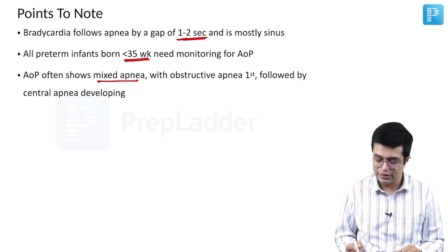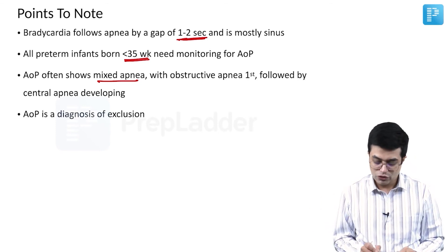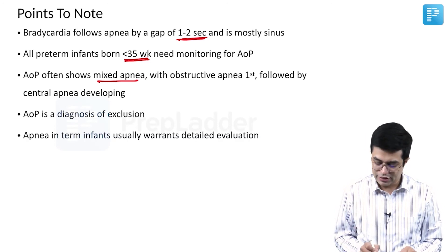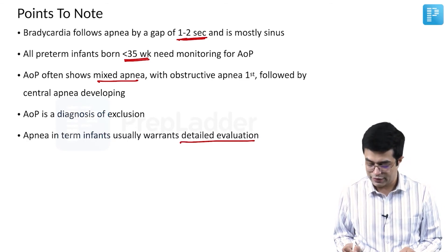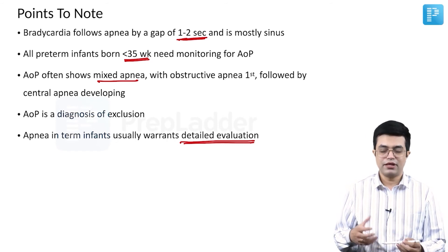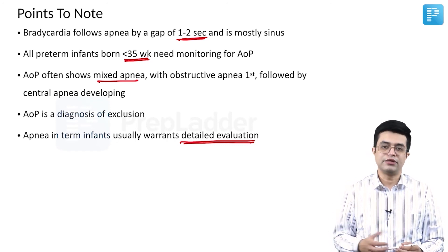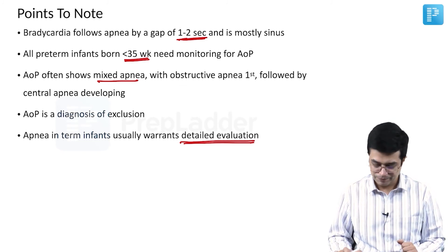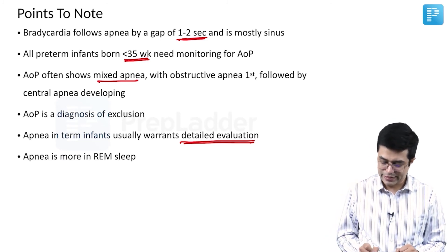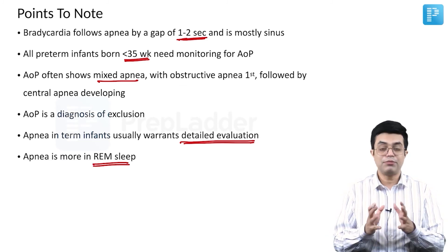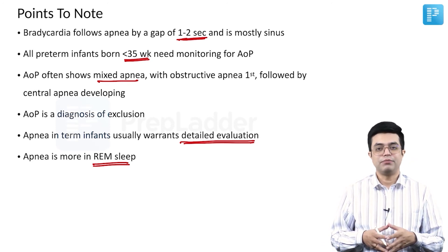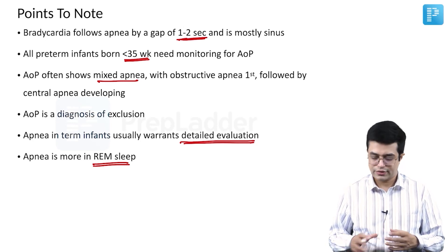AOP often shows mixed apnea, with obstructive apnea occurring first, followed by central apnea developing. AOP is a diagnosis of exclusion, and apnea in term infants usually warrants detailed evaluation with multiple investigations. Finally, these apneic episodes are more common during REM sleep compared to NREM sleep, as shown by EEG recordings.